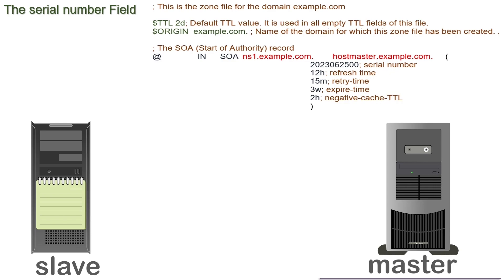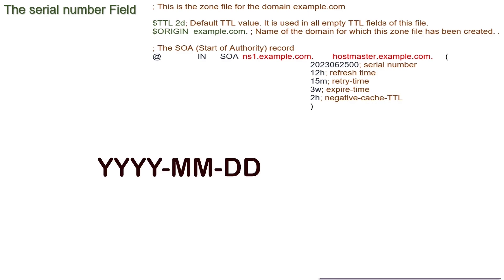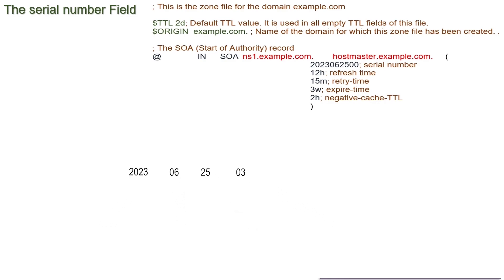Since the slave name server uses this number to detect changes, you need to update it every time you make a change to the file. You can use any number from the allowed range. Usually, administrators use the current date in YYMMDD format plus an incremental sequence number from 0 to 99 to generate a unique serial number for every change. For example, a serial number expanded using this technique shows the file was last updated on June 25, 2023, with '00' in the sequence field indicating it was updated only once that day. If updated more than once per day, incremental sequence numbers are used for each update.